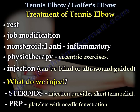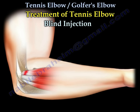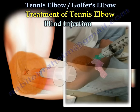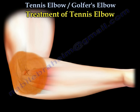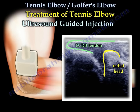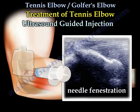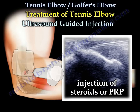PRP — platelets with needle fenestration — is probably the best treatment, but it is expensive, requires more than one injection, and can be challenging to perform. Here you can see the blind injection: the site is marked, the skin is disinfected, and the therapeutic fluid is injected into the selected marked site. For the ultrasound-guided technique, you identify the radial head and the tendon. Under ultrasound guidance, the needle is inserted through the tendon into the bony area of the lateral epicondyle, and fenestration of the tendon is done in conjunction with injection of fluid — either steroids or platelet-rich plasma.